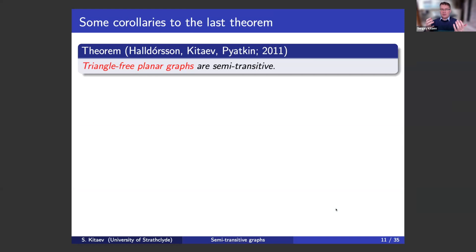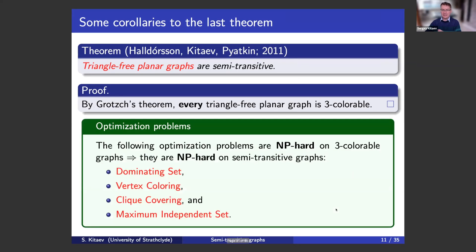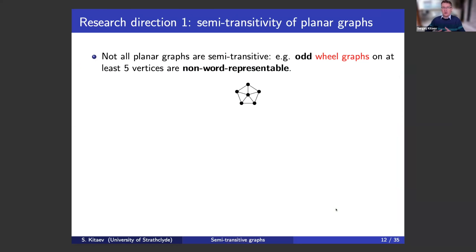Triangle-free planar graphs are semi-transitive, and this is kind of a corollary to the previous theorem because all of them are pre-colorable. For those interested in complexity theory, this is somewhat disappointing news that most classical algorithmic problems are actually NP-hard on word-representable graphs. We do have one problem solvable in polynomial time, but that's outside the scope of this talk. So research direction one: semi-transitive graphs on planar graphs.